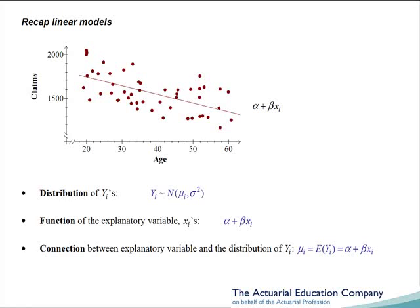What we're now going to do is generalize this model. And we'll do that by generalizing the distribution that the yi's, the claims in this case, can take. We'll also generalize the function of the explanatory variables. And finally we'll look at how we link the explanatory variables back to the mean of the distribution.